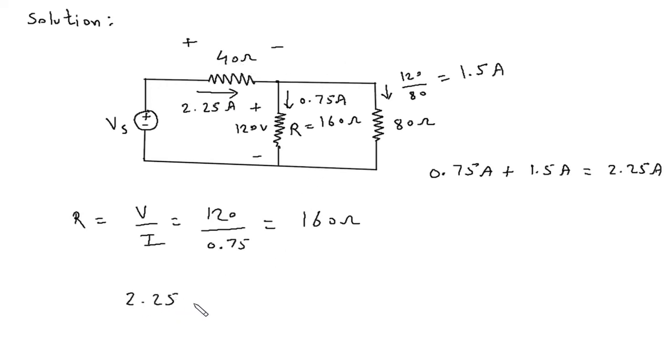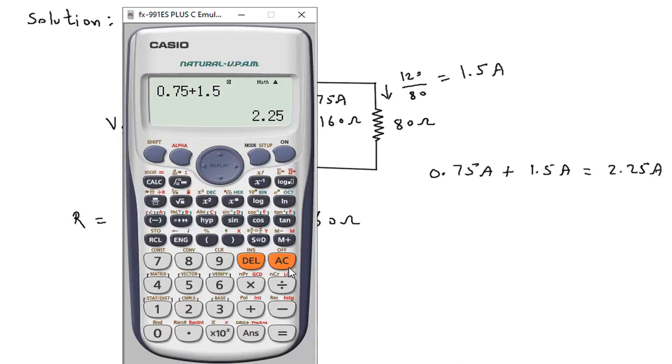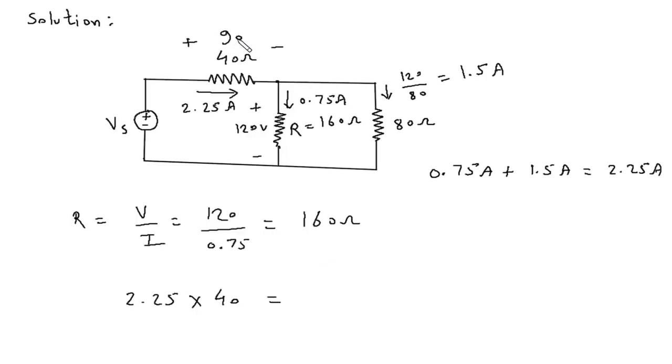2.25 into 40, so it is 90 volt. So this is 90 volt. The voltage across this resistance is 90 volt.